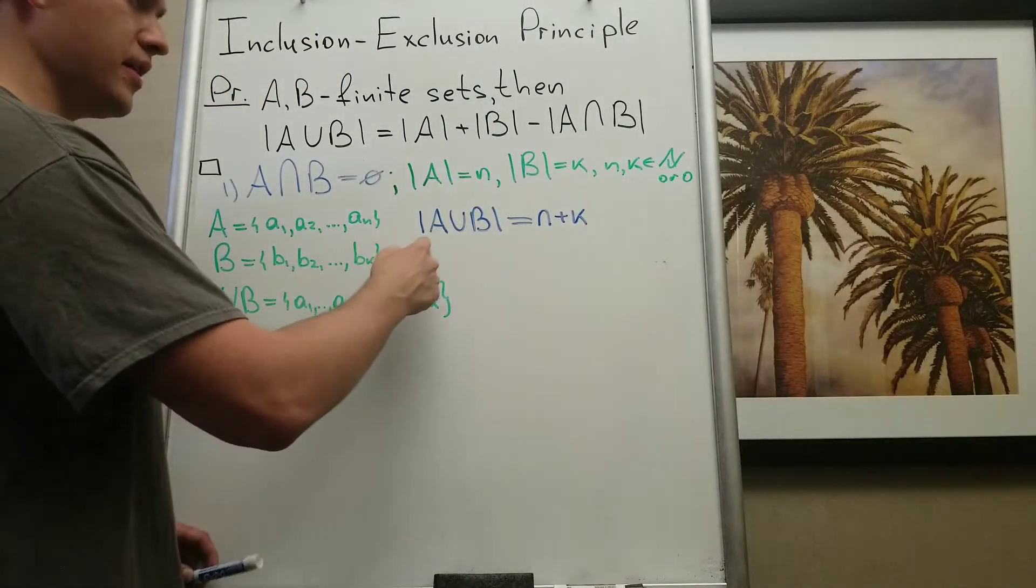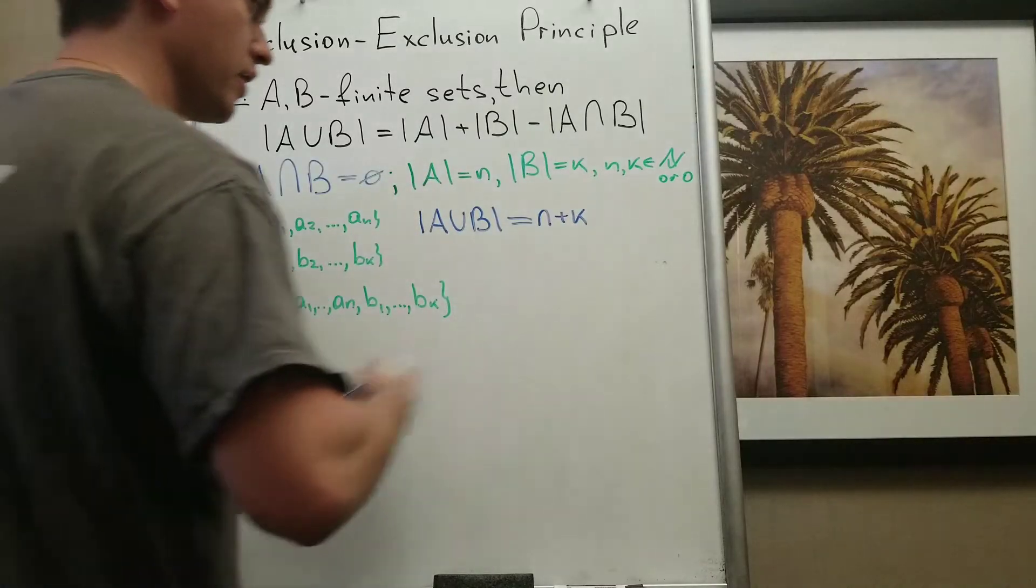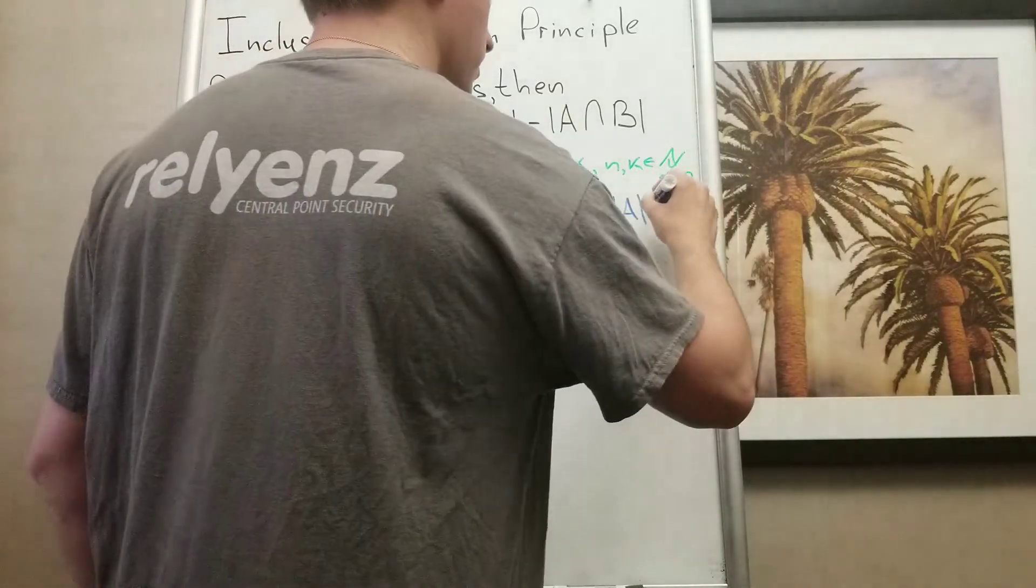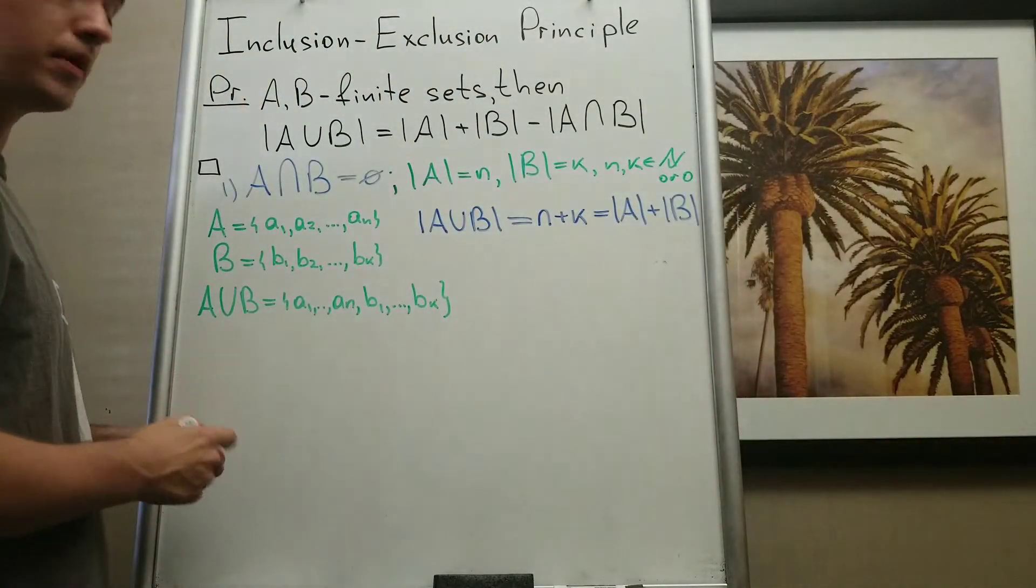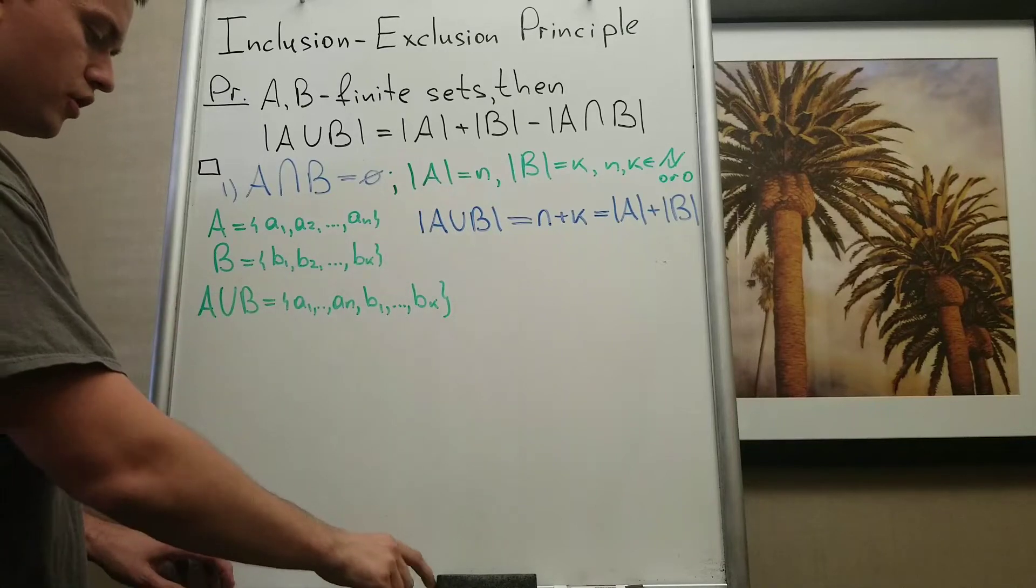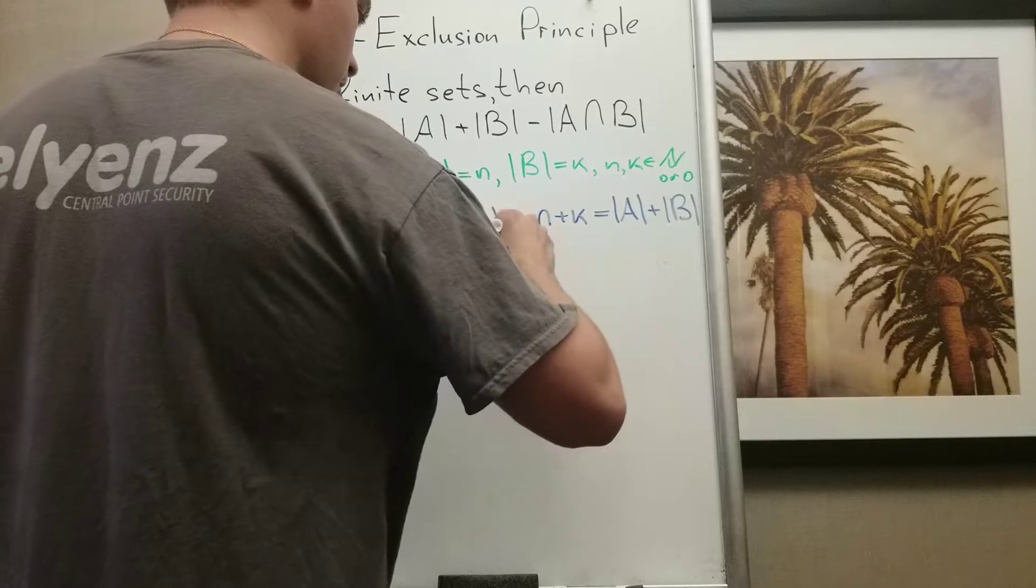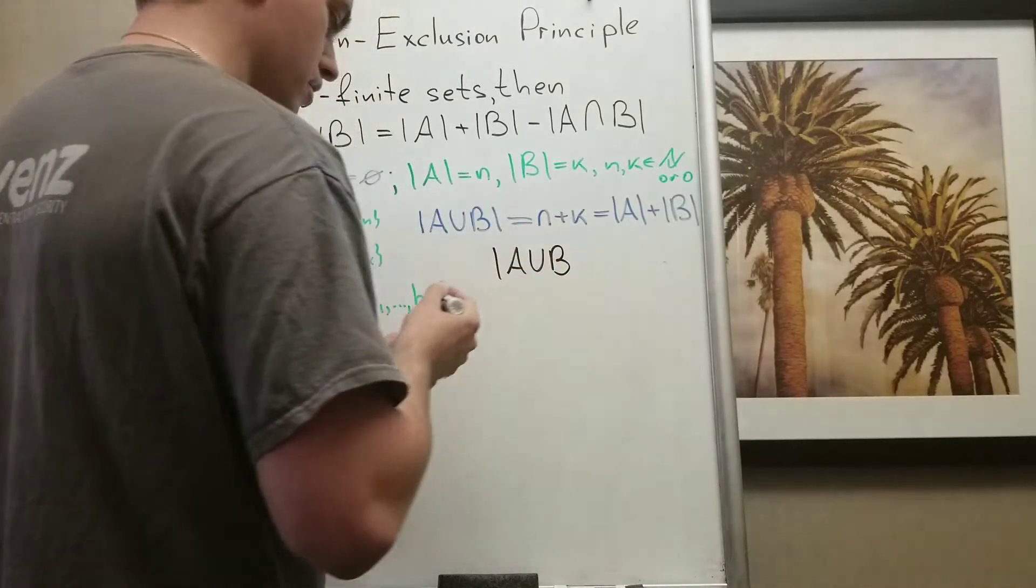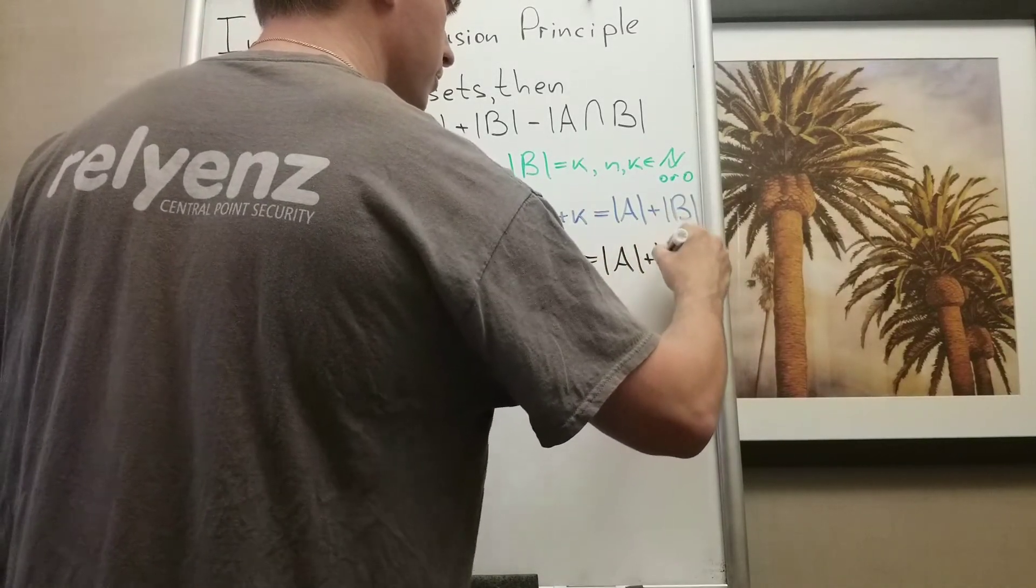From one side, but from another side we have that n is cardinality of A. So it equals cardinality of A plus k, cardinality of B. So when A and B are disjoint, what we get? We get that cardinality of A union B equals cardinality of A plus cardinality of B.